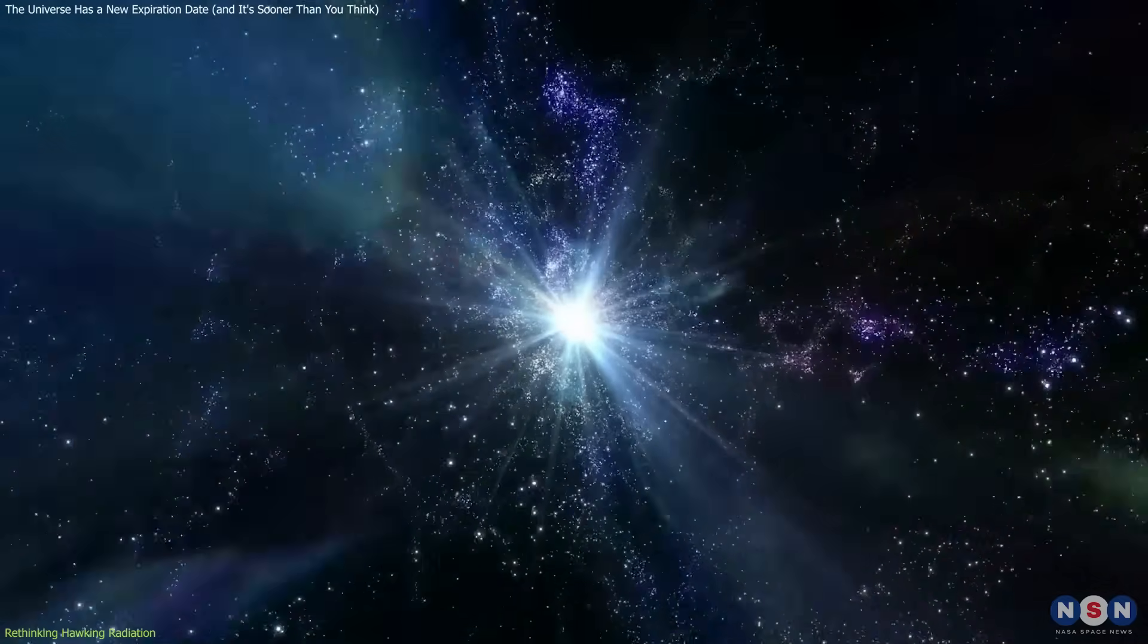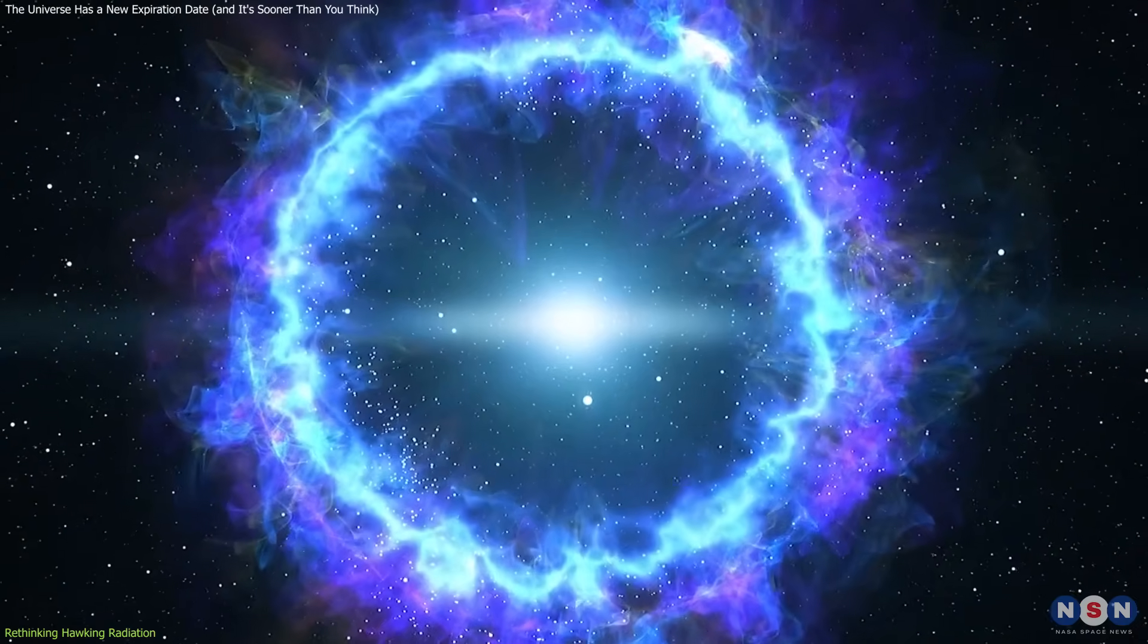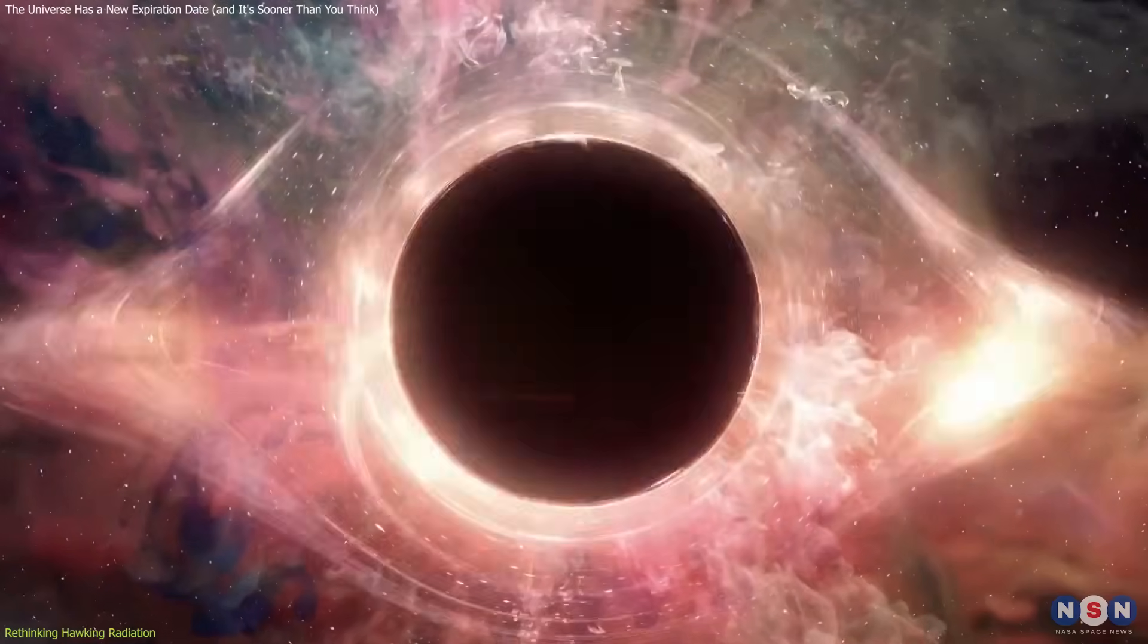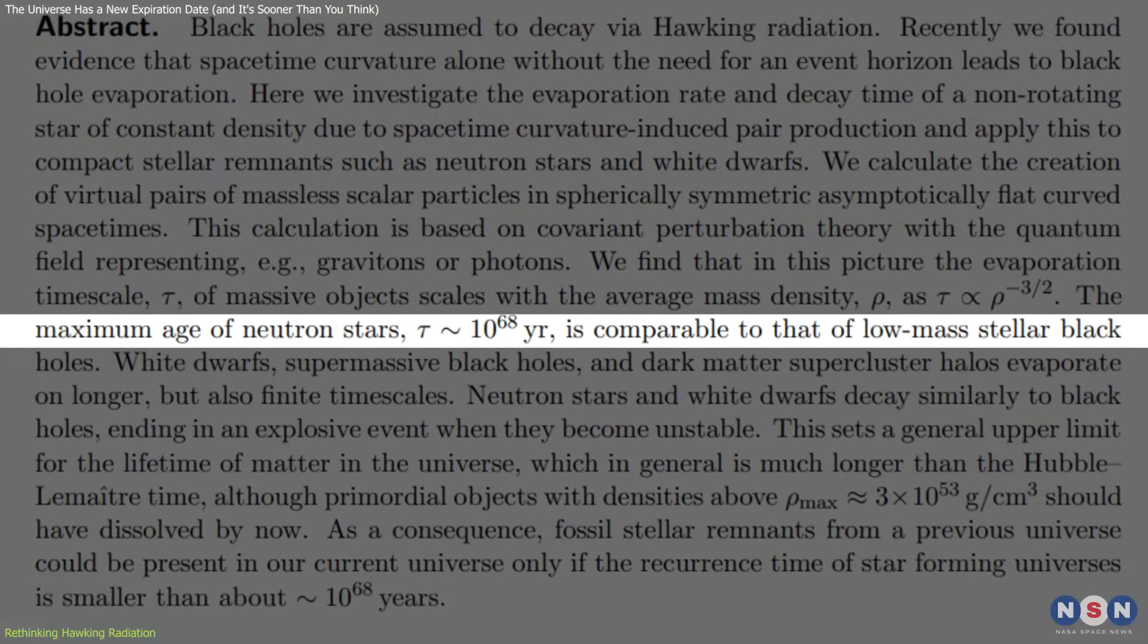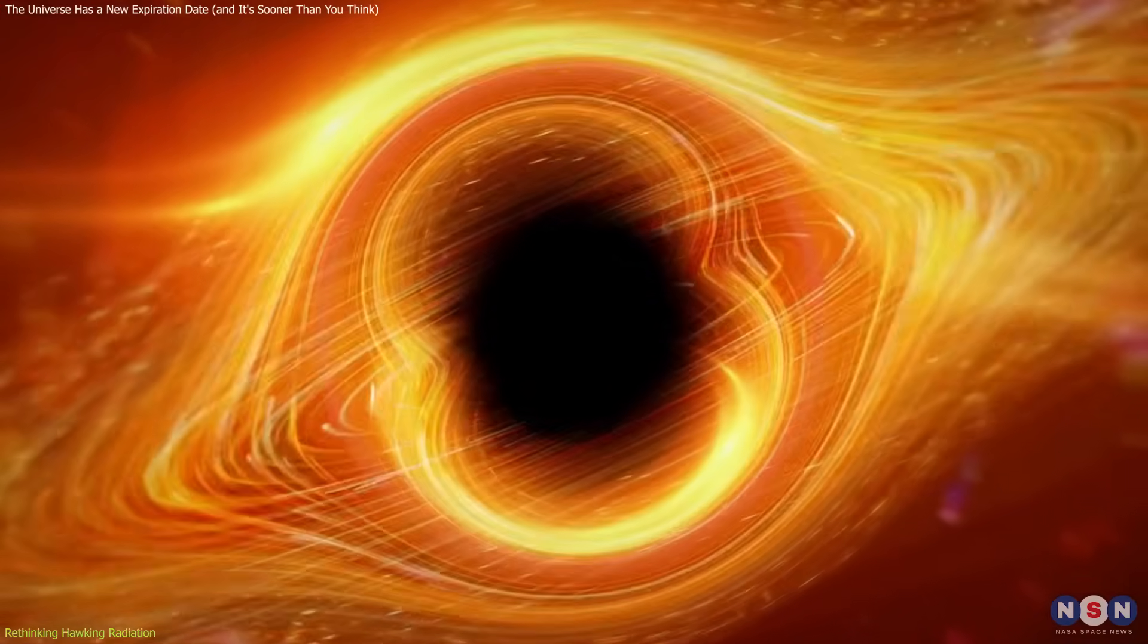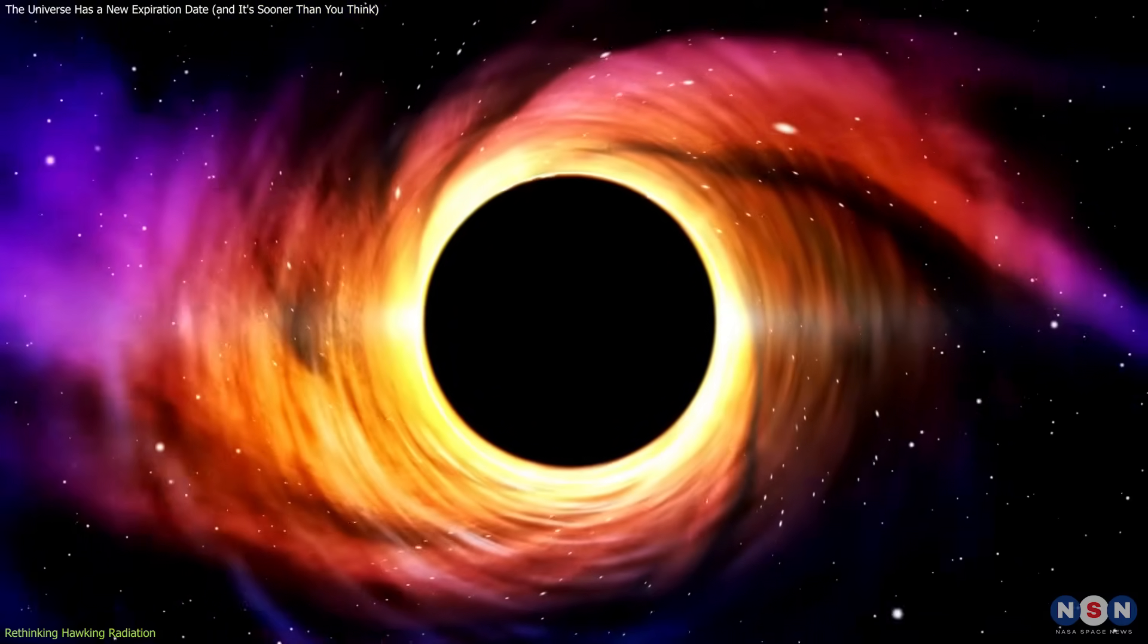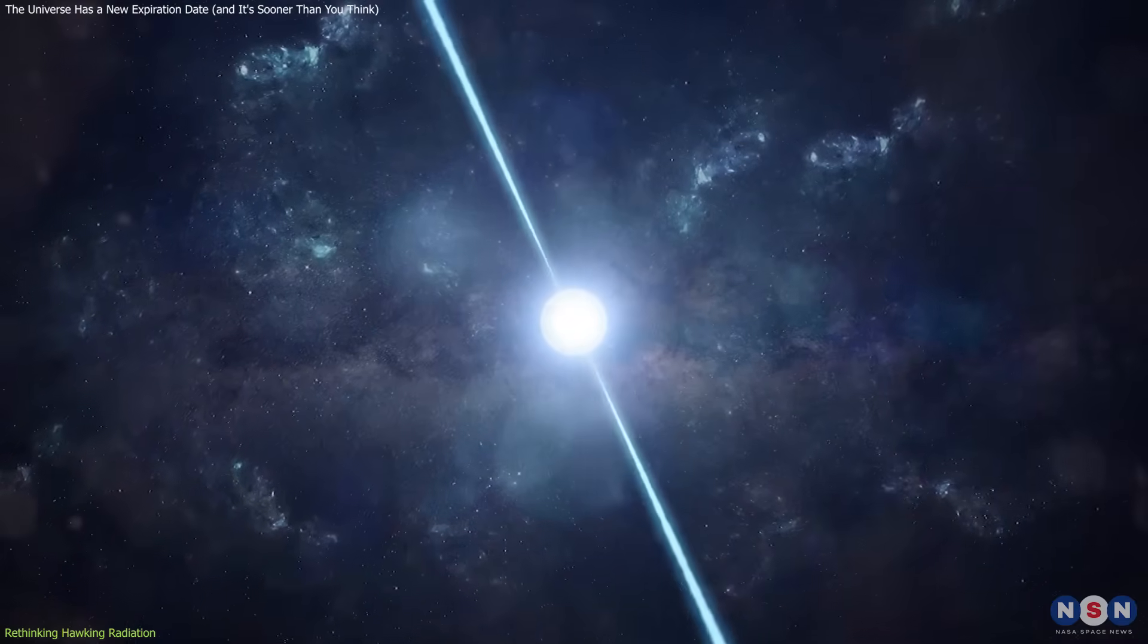White dwarfs, previously thought to endure for 10 to the 100th power years, would disappear in just 10 to the 78th power years. Neutron stars and stellar black holes, it turns out, have nearly identical lifespans of 10 to the 67th years, a surprising result since black holes possess stronger gravitational fields. The twist? Because black holes lack a solid surface, they end up reabsorbing part of their own radiation, slowing the decay process compared to neutron stars, which emit radiation more freely.